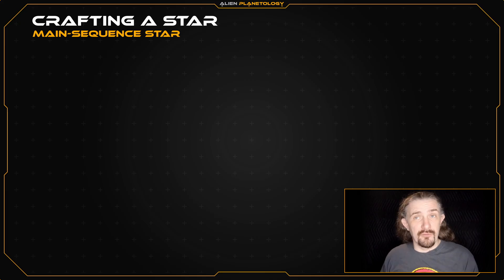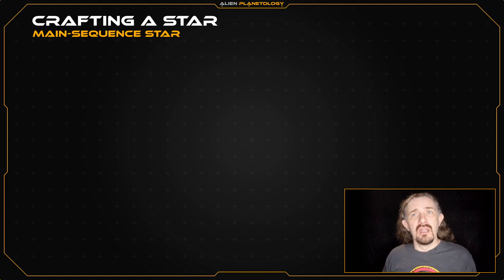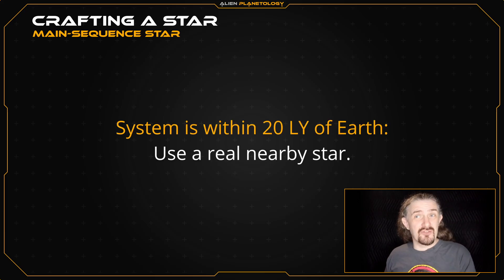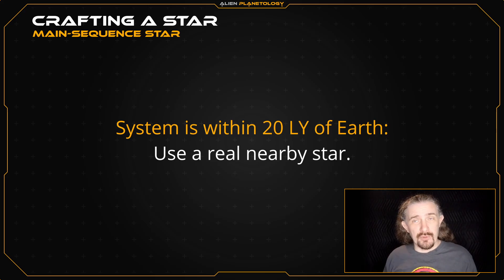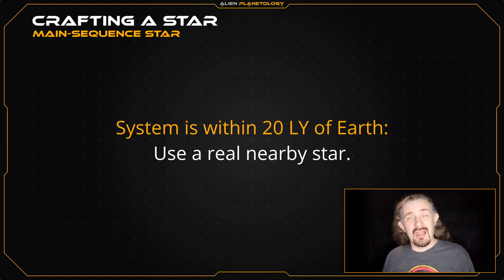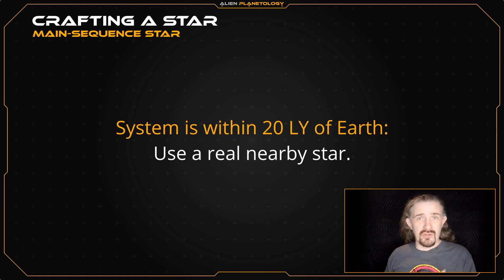Now, depending on the specifics of your fiction, you may or may not have a number of options for the creation of your star. If your planetary system lies astronomically close to Earth, say within 20 light years, then you should pick an actual star from the list of nearby stars and use all of its measured parameters. However, don't make the mistake of choosing a star based on the notoriety of its name. There are numerous science fiction authors who choose stars such as Procyon and Arcturus because they sound cool and are well known to audiences,